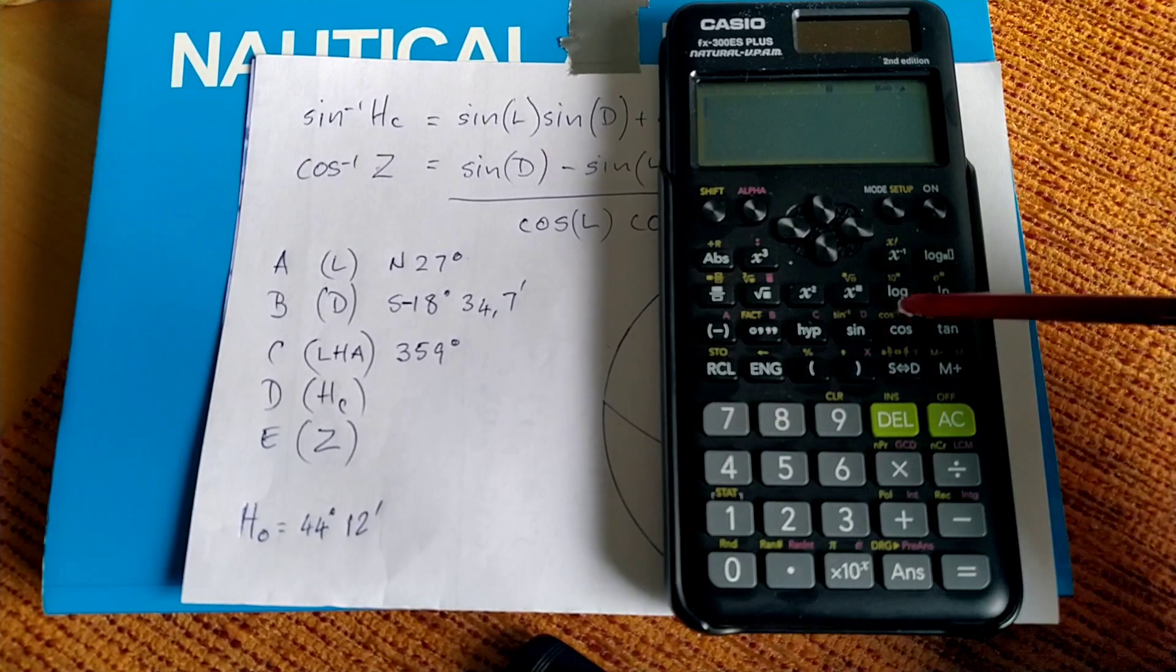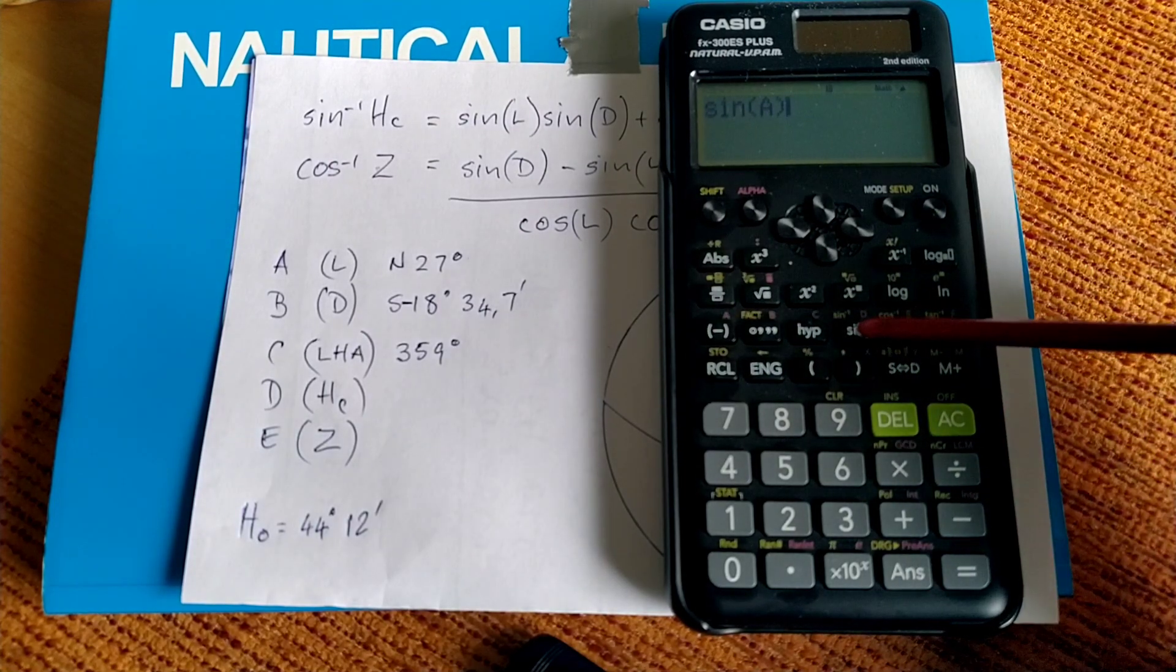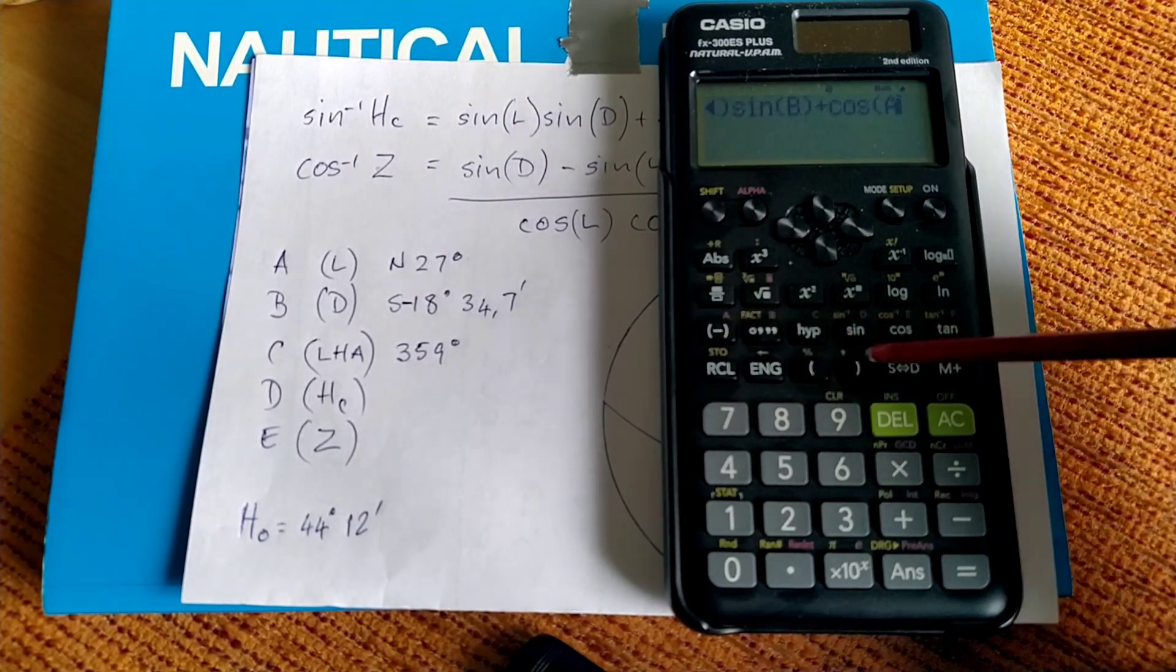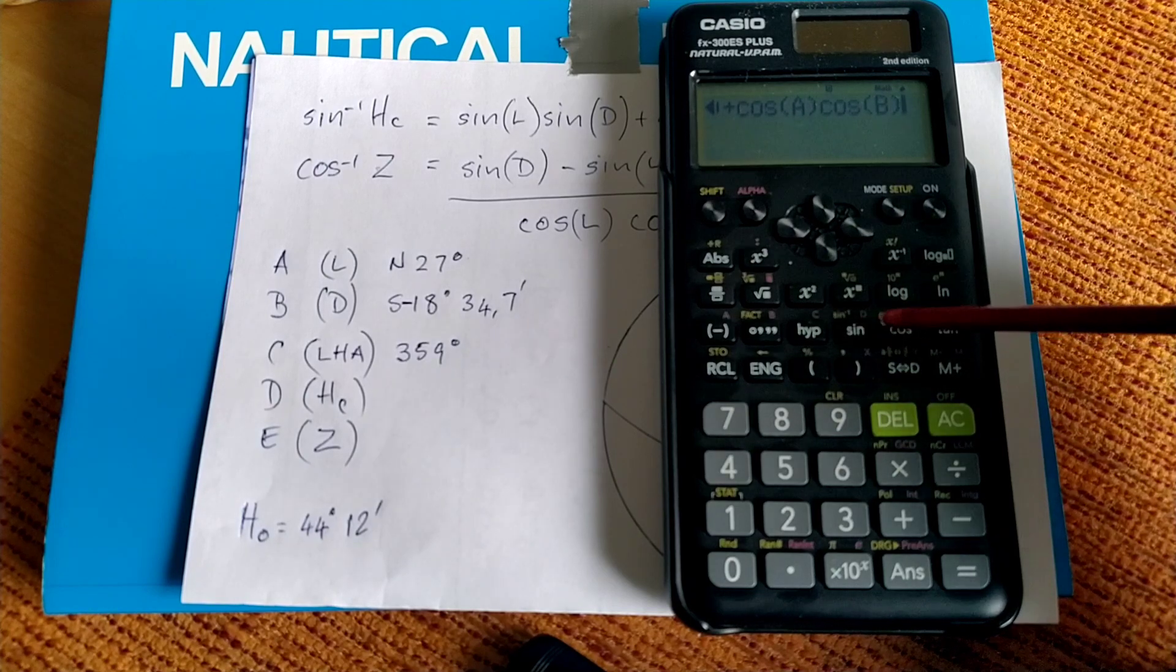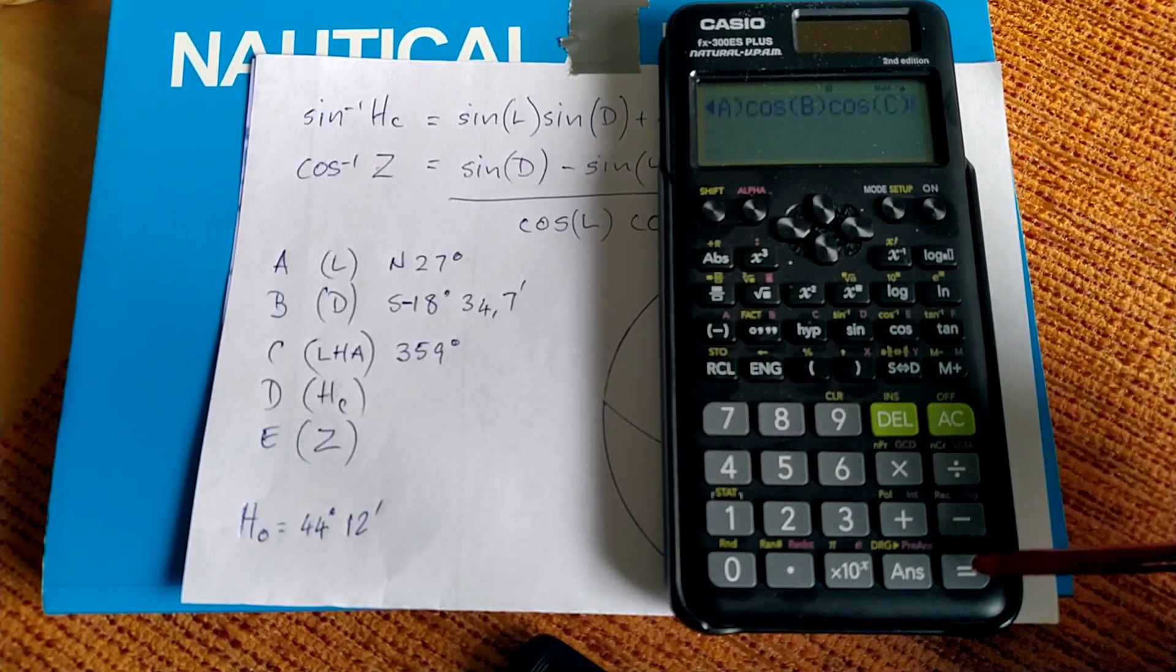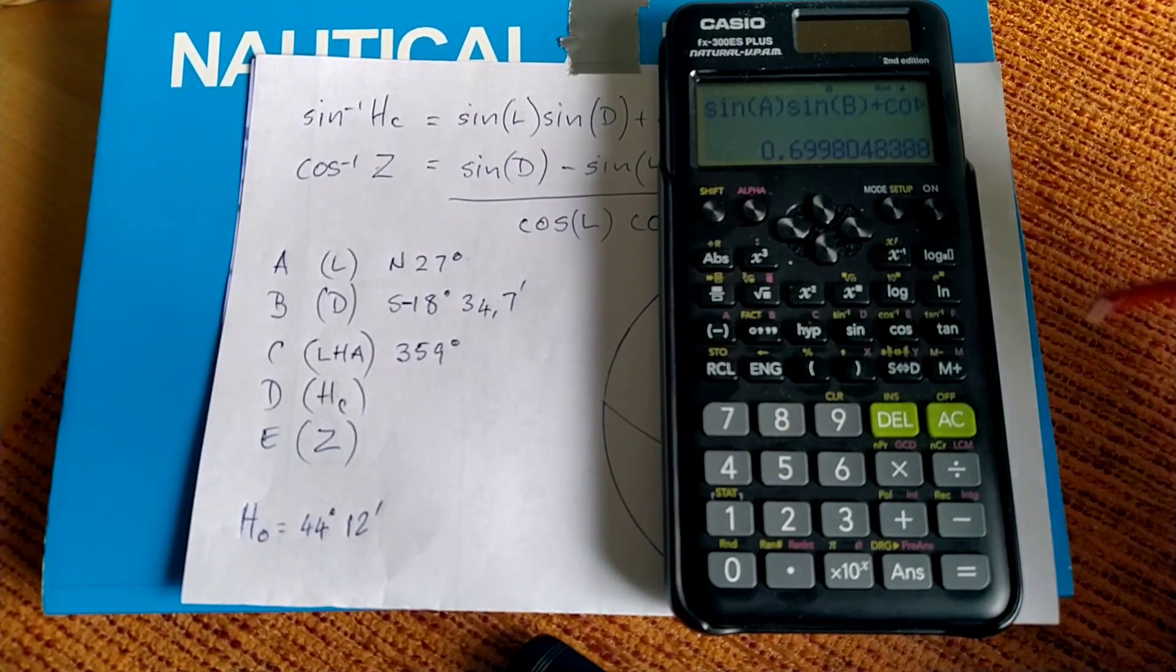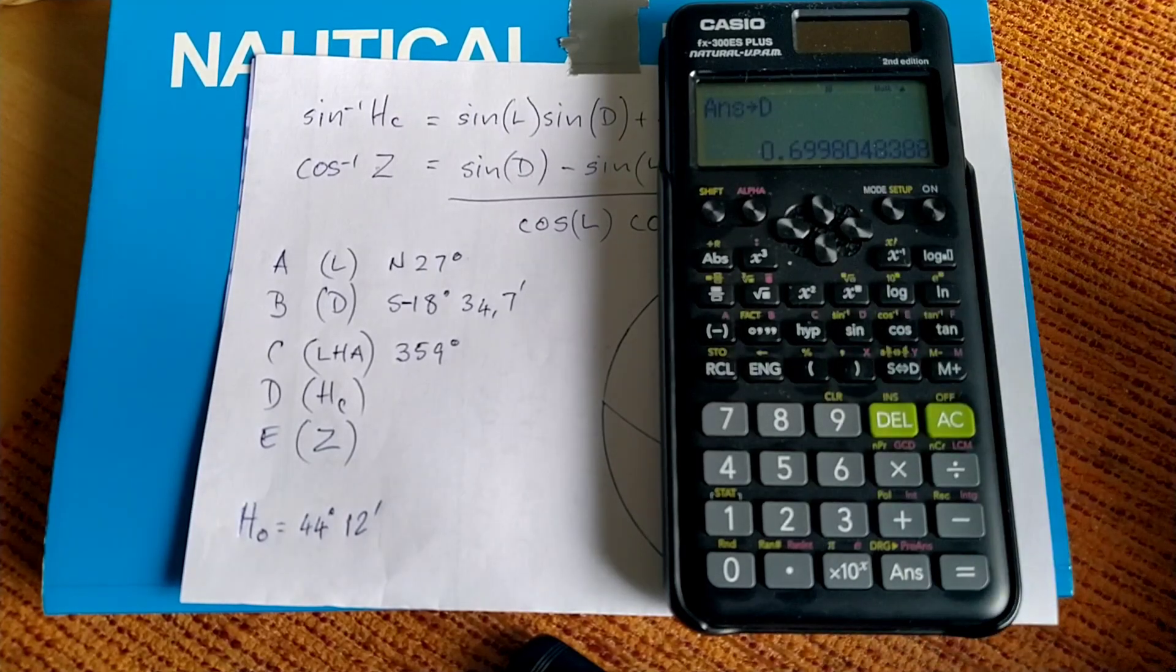So let's do that. Sine, recall, latitude, times sine, recall, declination, plus cosine, latitude, times cosine, declination, times cosine, LHA. And there we have the inverse sine of 0.699804. We're going to assign this number to D. Shift, store, D. There we go. So the answer has been assigned to D.